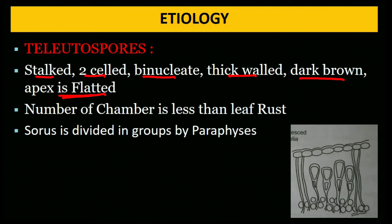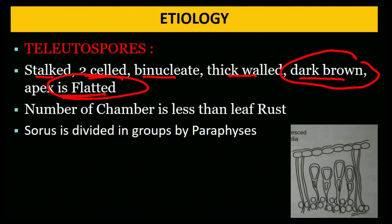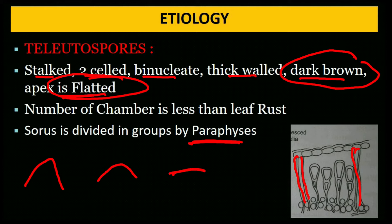The tip of teliospores differs across the three rusts: stem rust — pointed; brown rust — rounded; yellow rust — flat. Number of chambers is less than leaf rust. Sori are divided into groups by paraphyses — these paraphyses were absent in stem rust.